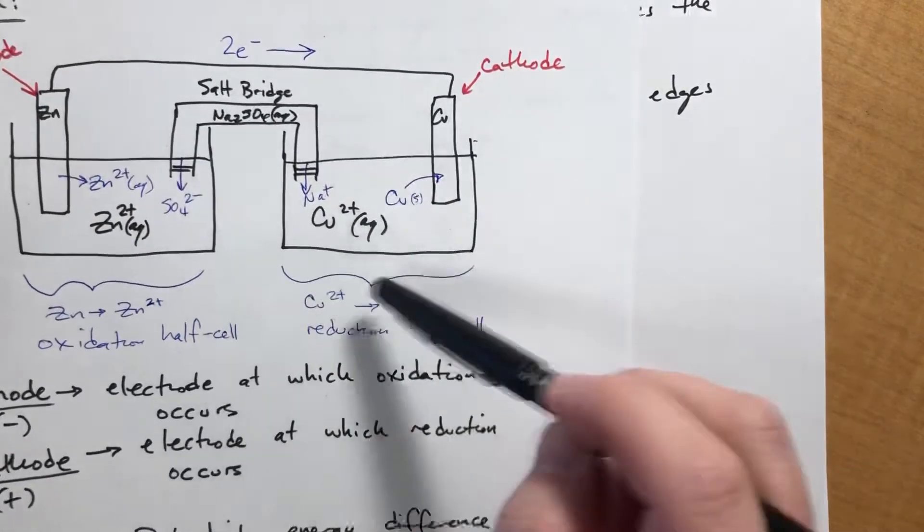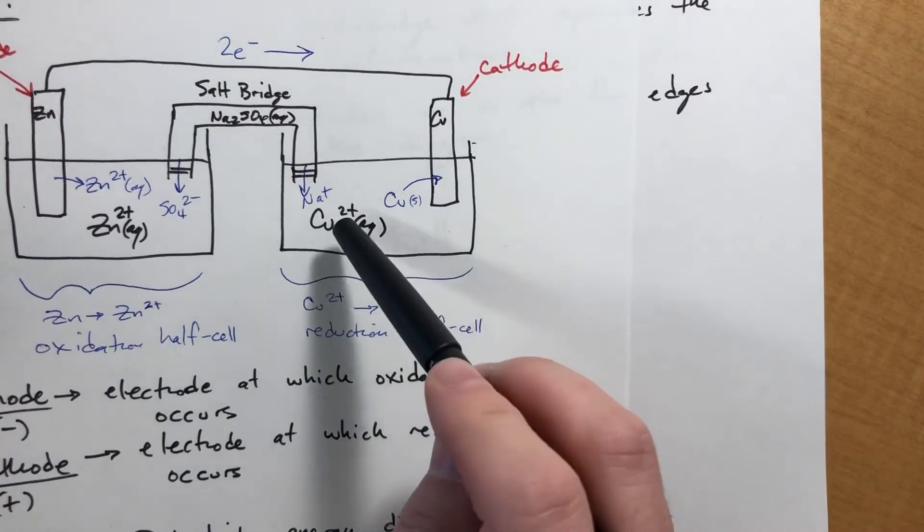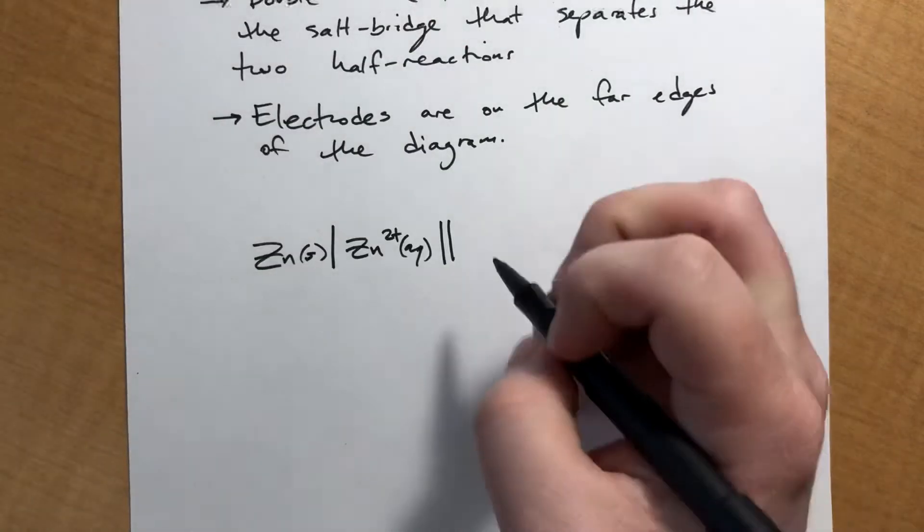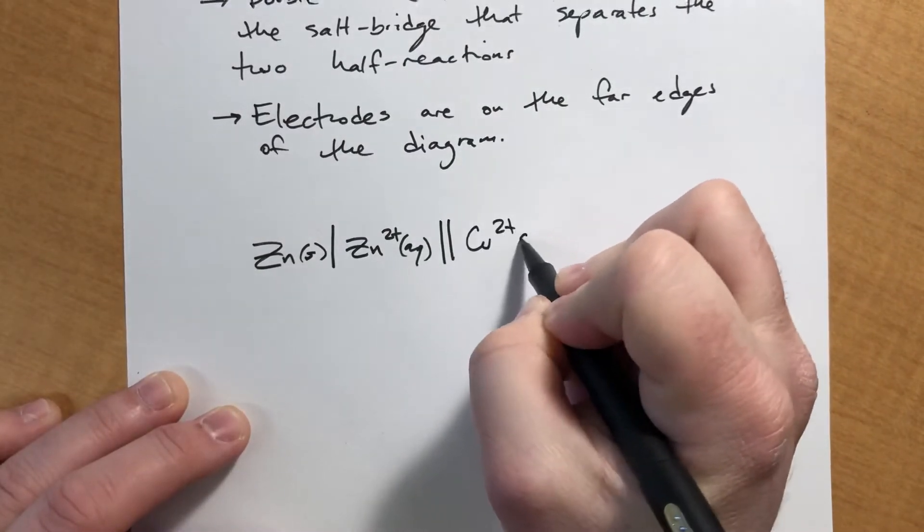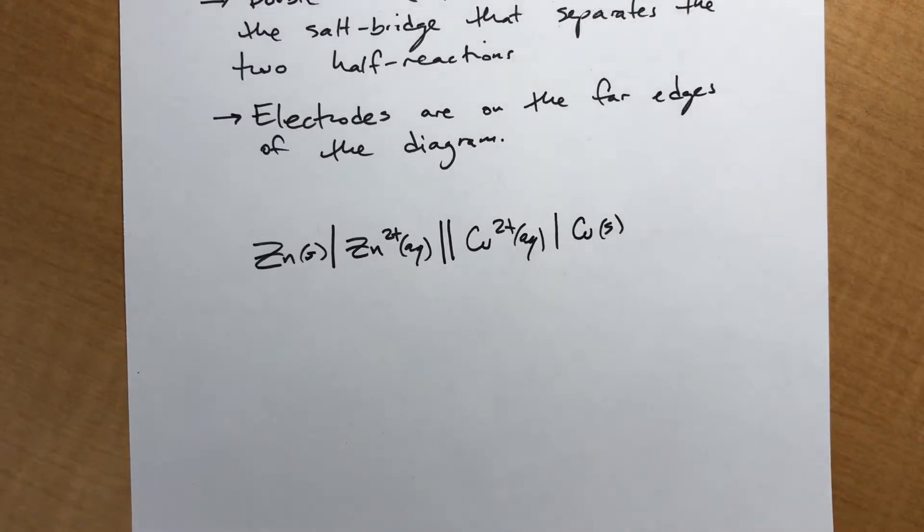And then on the other side, we're going to do the cathode. We need the electrode on the far end, so the copper 2+ is going to become copper solid.